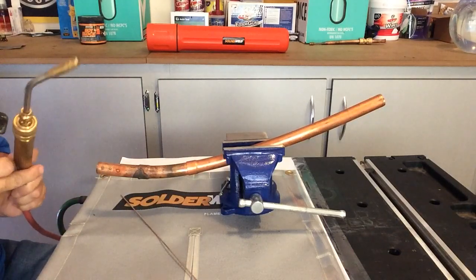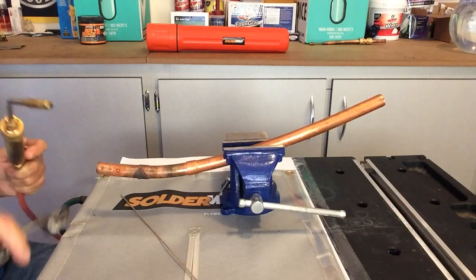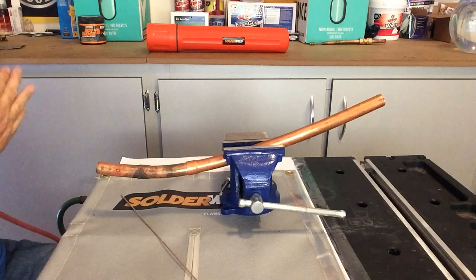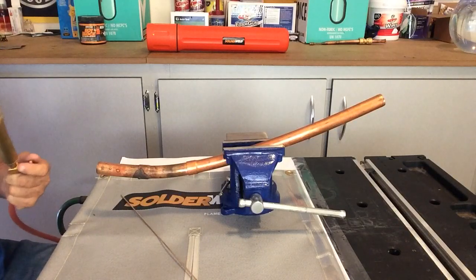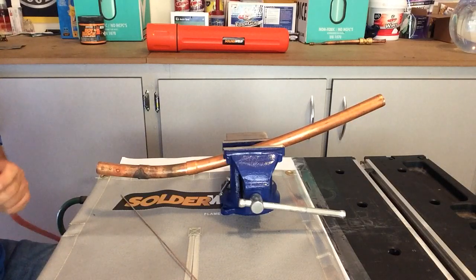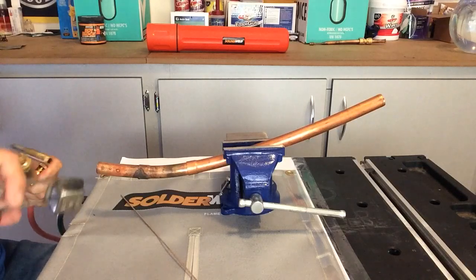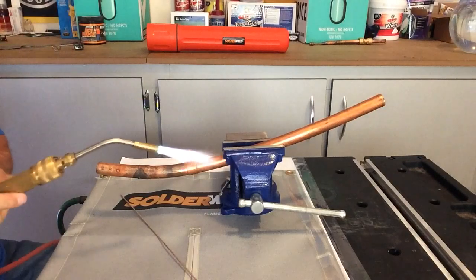You can get this brazing tip from True Tech Tools at TrueTechTools.com. You can also get the blanket and the silver solder from Solderweld through True Tech Tools as well. Make sure you use the promo code HVACGUY and you'll get 8% off the entire order. So we're going to go ahead and light it up. Let's see what the blanket does.